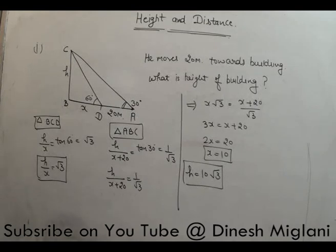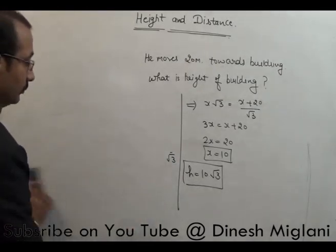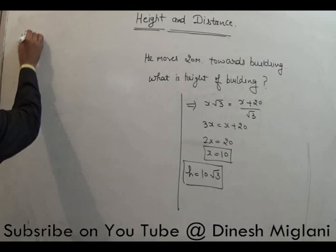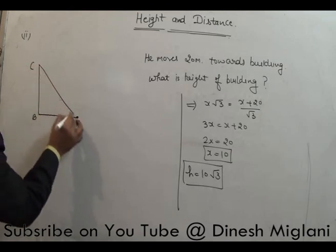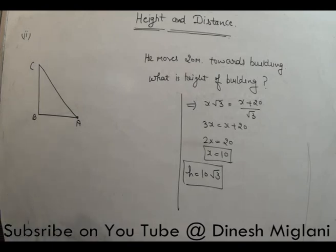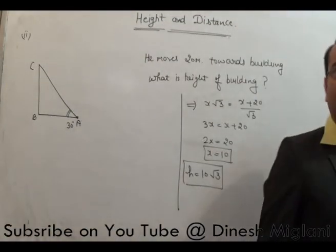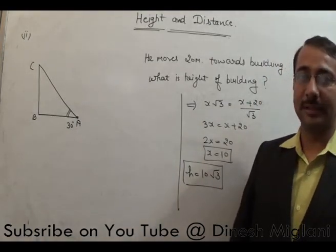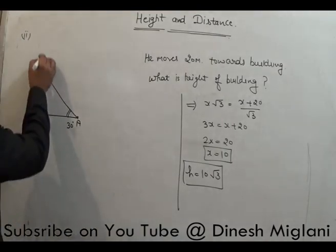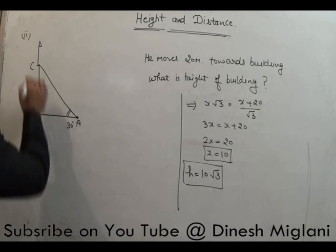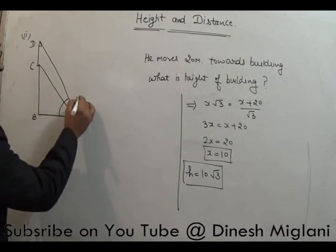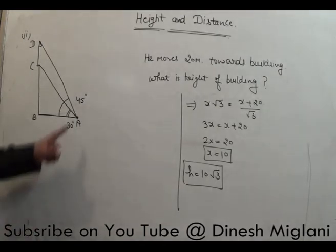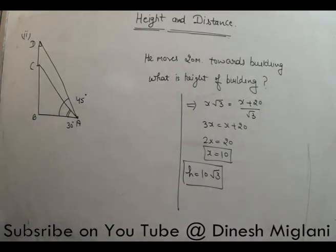The second problem involves a flag on top of a building. A man is standing at point A, and building BC is in front of him. When he looks at the top of the building at point C, he finds the angle of elevation to be 30 degrees.